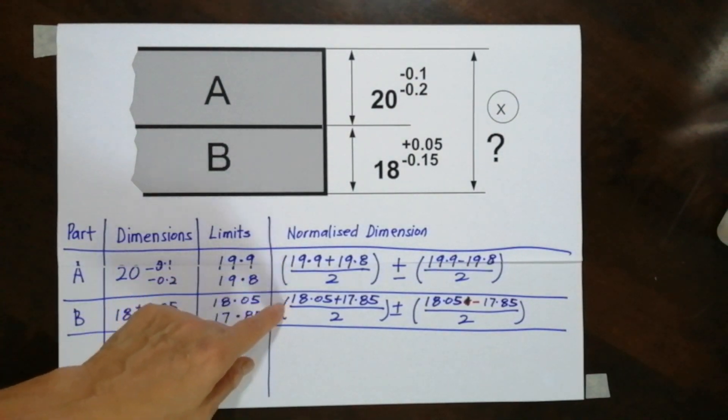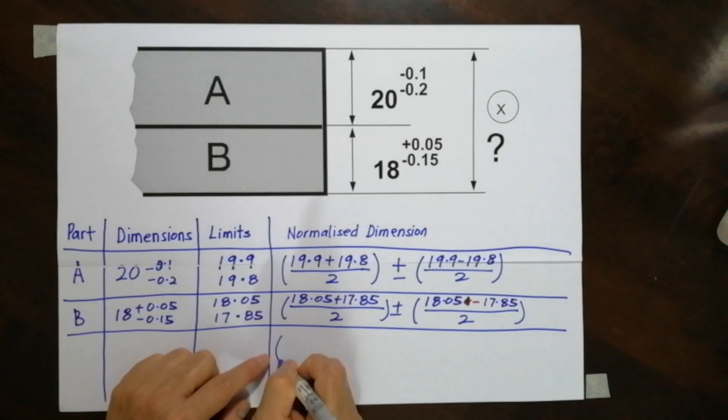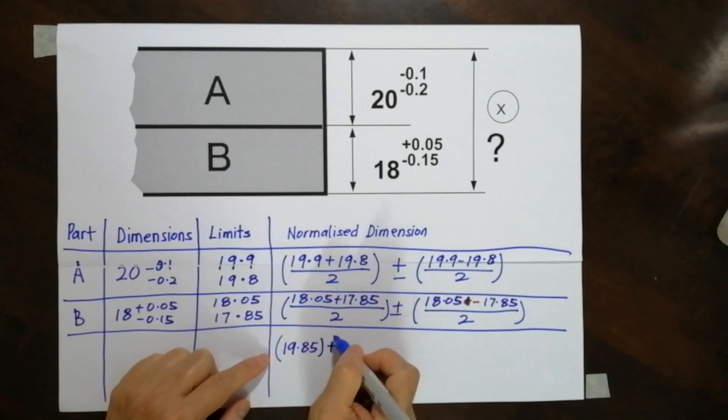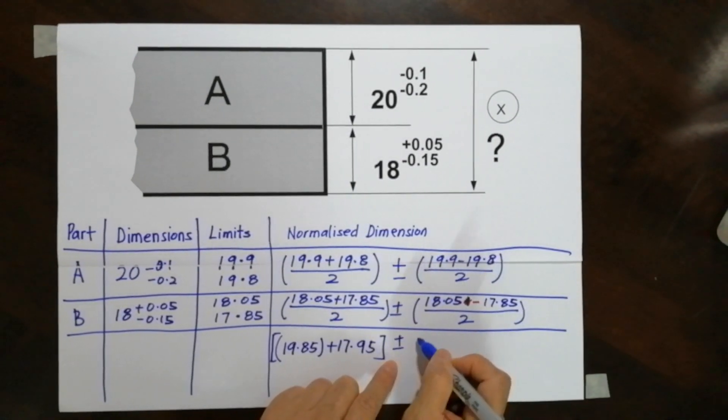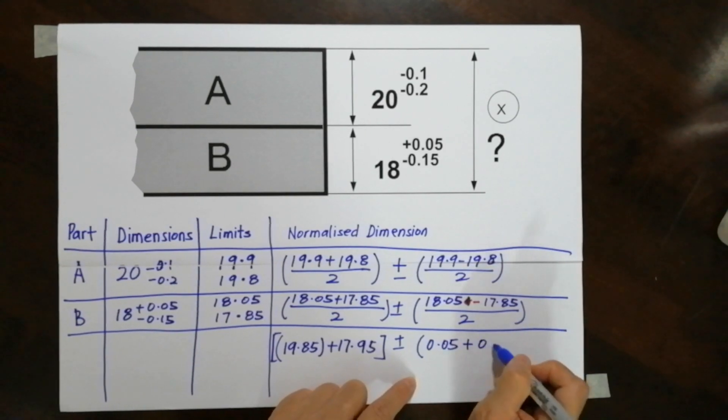Now, we will have to add these two values together over here. So if you add the two together over here, you will get, I should have said that, this value when I average it, I will get 19.85 plus 17.95. I poor use of bracket, then plus and minus. This value, I will get 0.05 plus. This one, I will get 0.1.